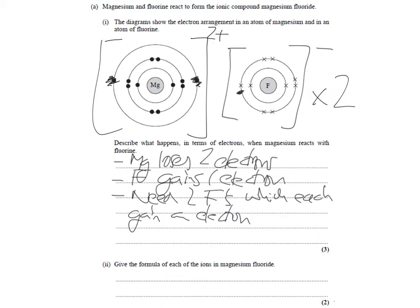So, the formula of each ion, well, we've got magnesium 2 plus. And we've got F minus. And if we were asked for the formula of the compound, we're not, but they might ask you, it would be MgF2. OK, because you need 2 fluorines to house the 2 electrons that each magnesium has lost.